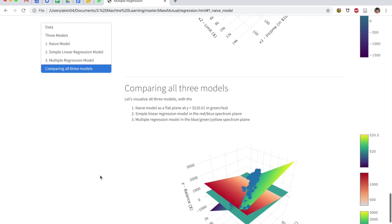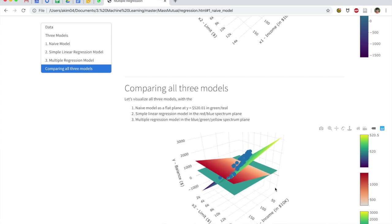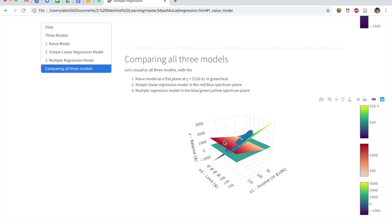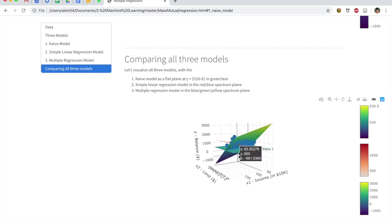Last but not least, let's compare all three models. So there's definitely a lot going on here. So why don't I just scroll down? The plane here in turquoise or teal, that represents the naive model. So that irrespective of what value of x1 income and x2 limit you have, you're just going to guess $520. There you see it, $520.01.